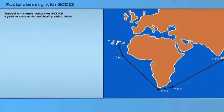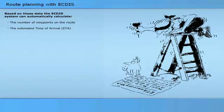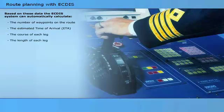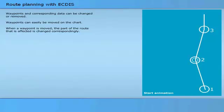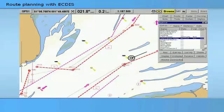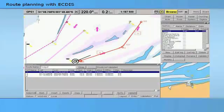Based on these data, the ECTIS system can automatically calculate the number of waypoints on the route, the estimated time of arrival, the course of each leg, and the length of each leg. Waypoints and corresponding data can be changed or removed, and waypoints can easily be moved on the chart. When a waypoint is moved, the affected part of the route changes correspondingly, making it easy to see the consequences. All routes in an area are drawn on the chart screen, and an overview of all pre-programmed routes is displayed in a list from which the navigator can select a suitable route.